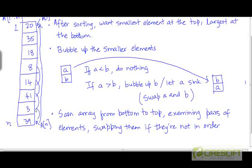First we'll compare 39 and 3 — 3 is above 39, so this is the correct relative order. Then when we look at the next pair, 3 and 41, we're going to swap 3 and 41 because 3 should appear above 41. Then we'll compare the next pair — 3 is again lighter than 14, so 3 will bubble up and 14 will sink down. Because 3 is the smallest element in the array, it's going to keep bubbling up all the way to the top. Finally, we're going to have 3 at the very top, and all the other elements will have sunk down by one position.